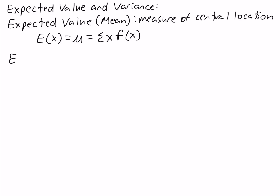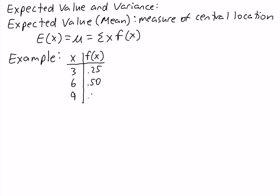So let's take a look at an example. Suppose we want to compute the expected value of a random variable with the following probability distribution. The values of the random variable are 3, 6, and 9, and the corresponding probabilities are 0.25, 0.5, and 0.25.